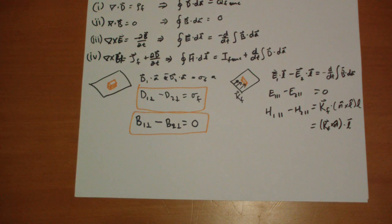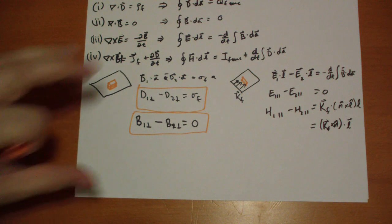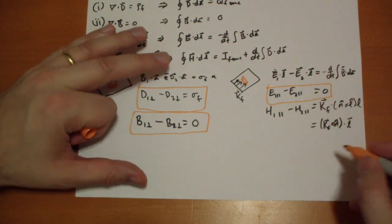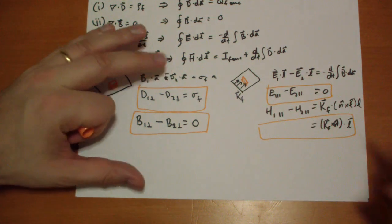So let's put boxes around these two results. The E field doesn't jump, but the H field does jump. We can pull out the L that was common, so that term goes away.